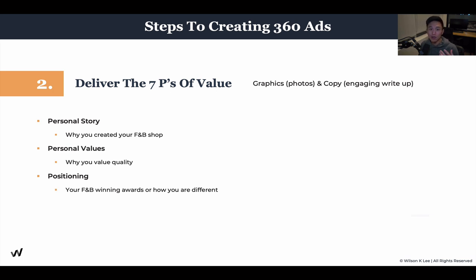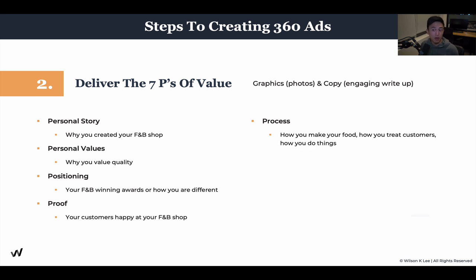Next up is positioning — we talked about winning awards and how you're different. Is it because you offer sustainable fish or ocean-wise? What makes you different from your competitors? Then proof — your customer testimonials are the best way to showcase that people really enjoy what you serve. Process — how do you make your food, how do you treat your customers? Transparency is super powerful, especially in today's age. Everyone buys into authenticity. If you can showcase how your cook prepares a meal or goes out to buy ingredients from the local farmer's market, that acts as really powerful content.